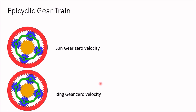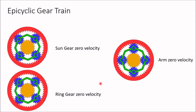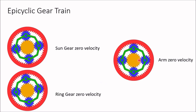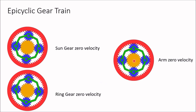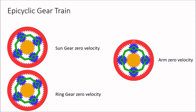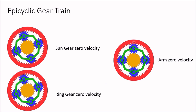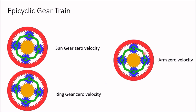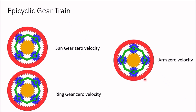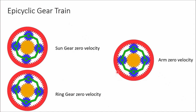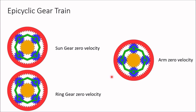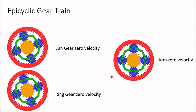When the ring gear is fixed, you can give input to the arm and get output at the sun gear. The third arrangement is where the arm has zero velocity — the arm is fixed. Then you can give input to the sun gear and get output at the ring gear, or give input to the ring gear and get output at the sun gear. In this way, by fixing different gears or the arm, you can obtain different gear ratios.